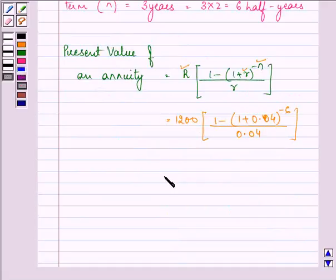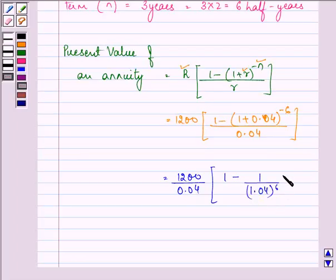Which can be written as 1200 upon 0.04, it can be taken out and we have 1 minus 1 upon 1.04 raised to the power 6, as we have been given the value of 1.04 raised to the power positive 6, that is why we have reciprocated it.